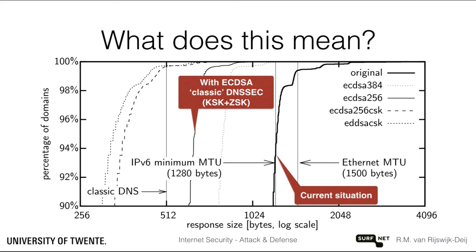If we then look at what would likely be the most common implementation using elliptic curve cryptography, we see that the response size is dramatically reduced to less than half of that for RSA. And by the way, the x-axis of the graph has a logarithmic scale.